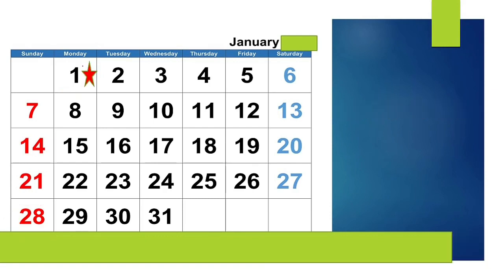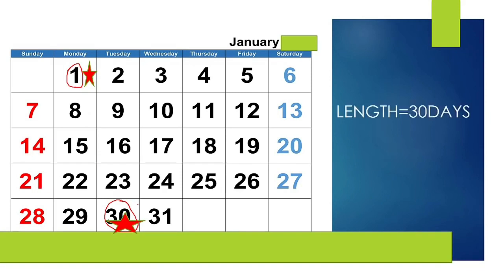Now we will do another example to calculate the length of the cycle. If someone's period starts on 1st January, mark this date on your calendar and count up to the first day of your next cycle. If the first day of the next cycle is 30th January, the length of the cycle will be 30 days.